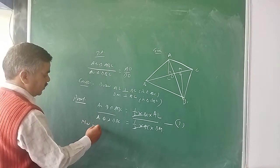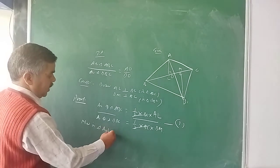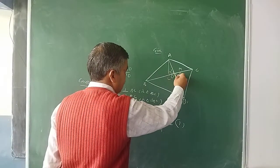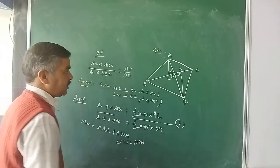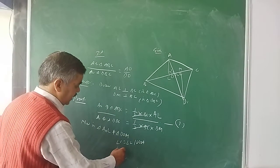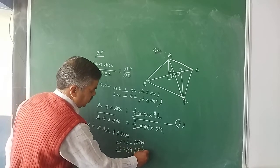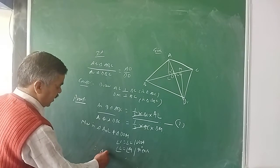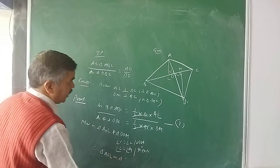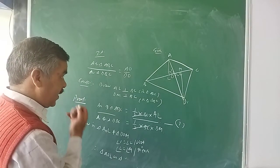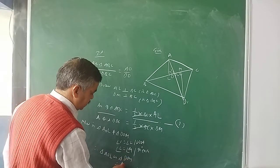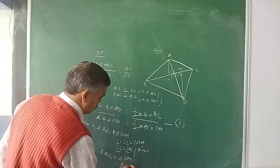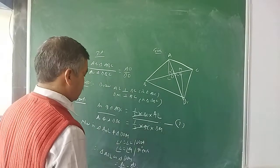So AL upon DM — from the similar triangles AOL and DOM — I can express as AO upon DO. Give it number 2. So from equations 1 and 2, AL upon DM can be replaced by AO upon DO. Therefore area of triangle ABC to area of triangle DBC equals AO upon DO.